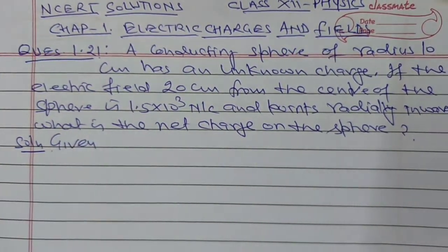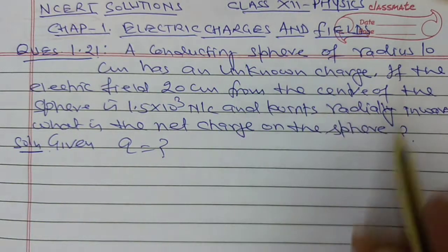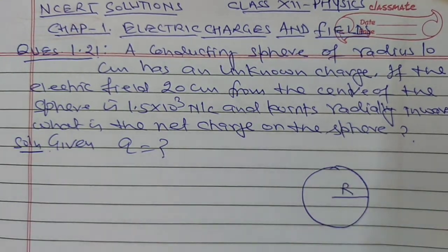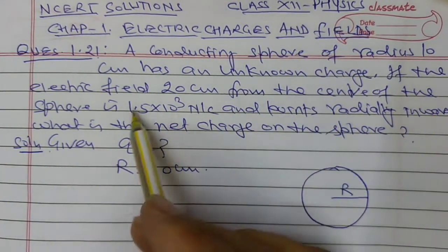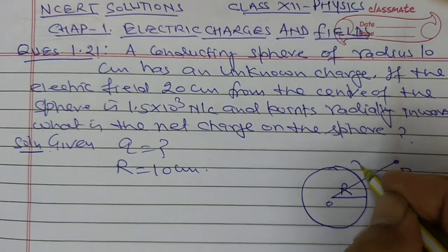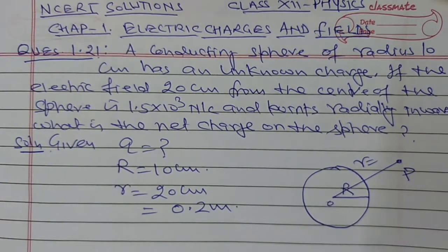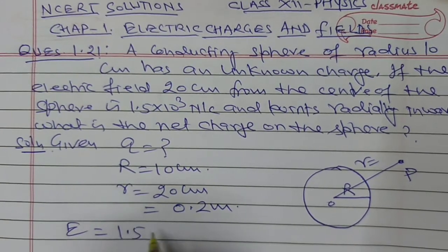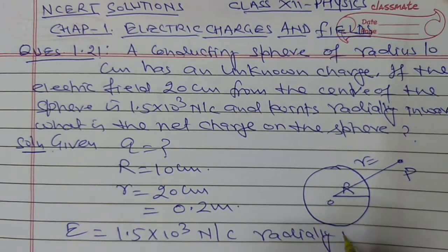In this question, given that unknown charge Q is to be calculated. The radius of this conducting sphere, capital R, is given as 10 cm. The electric field at point P, at distance r equal to 20 cm, which is equal to 0.2 m, is given as 1.5 into 10 to the power 3 N per Coulomb, radially inward.